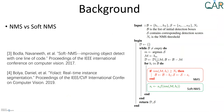This slide shows the differences between NMS and soft NMS. The difference is really just one line of code. Traditional NMS completely eliminates boxes whose overlap exceeds the threshold, while soft NMS instead reduces the score of those high-overlap boxes further down, without eliminating them entirely.